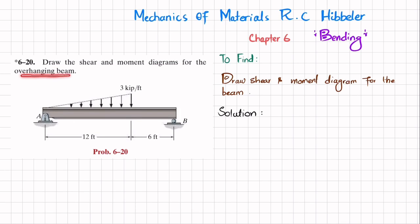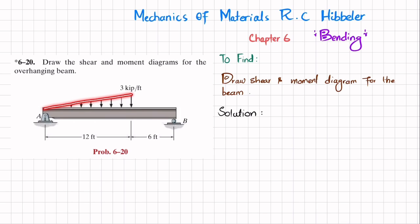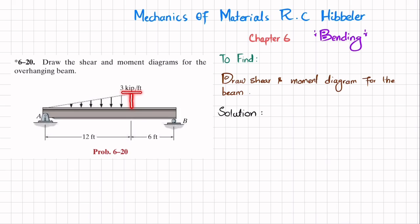Here it is written as an overhanging beam, but it is not an overhanging beam — it is a simply supported beam. This is beam AB, with a pin support at point A and a roller support at point B. There is a triangular load from A over a length of 12 feet, with a maximum intensity of 3 kips per foot at end A, decreasing to 0. We have to draw the shear and moment diagram for the beam.